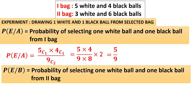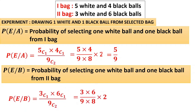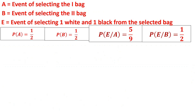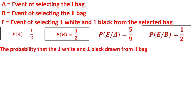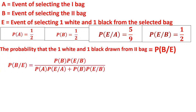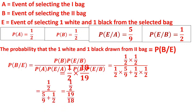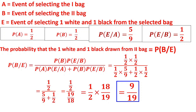For E given B — probability of selecting one white and one black from the second bag: the second bag has 3 + 6 = 9 balls, so denominator is 9C2. Numerator is 3C1 × 6C1 = 18. So 18 / 36 = 1/2. Now all values are ready: P(A), P(B), P(E|A), P(E|B). The question asks for the probability of drawing one white and one black from the second bag — that is B given E. Total probability is in the denominator: P(A)×P(E|A) + P(B)×P(E|B). Numerator is P(B)×P(E|B). Substituting: (1/2 × 1/2) / (1/2 × 5/9 + 1/2 × 1/2). Final answer: 9 upon 19.